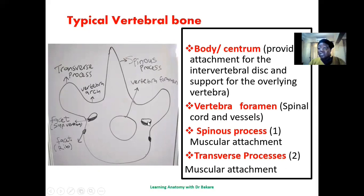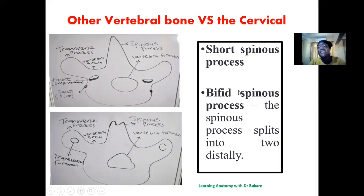We have the superior and inferior facets for the attachment of the superior vertebra. This is the entire configuration of what a typical vertebral bone is. There is a distinct differentiation between the cervical vertebra and the other vertebral bones, even though we know the general configuration. In the cervical vertebra, there are unique differentiations — they tend to be a bit different from what we see in the other vertebral bones.